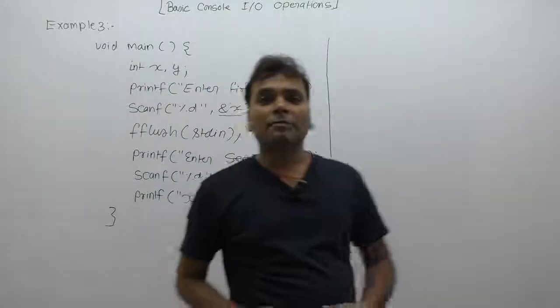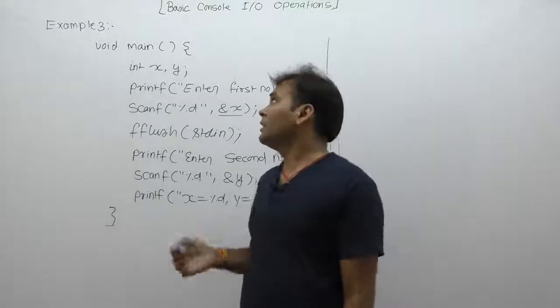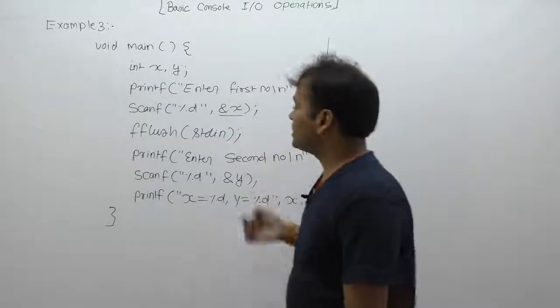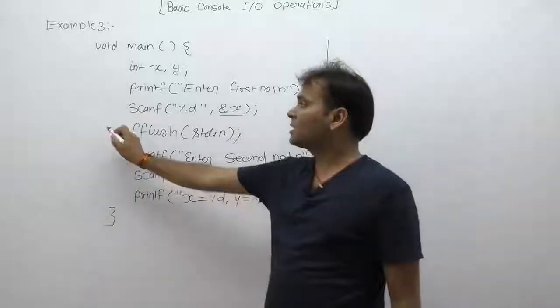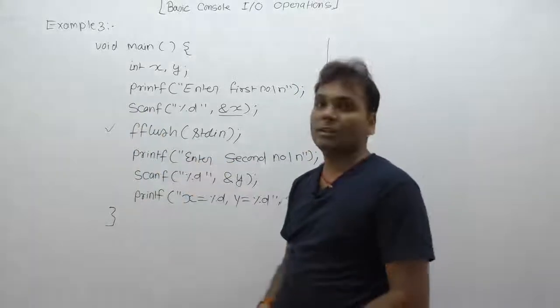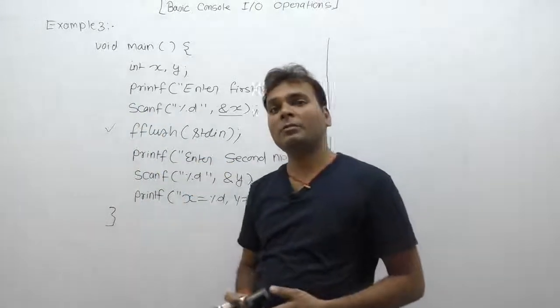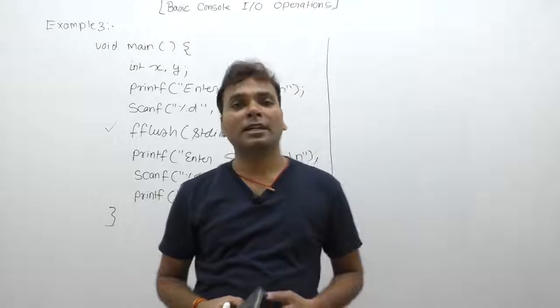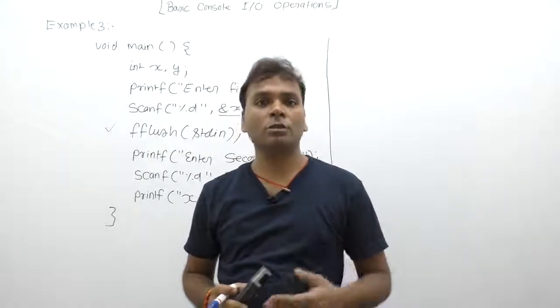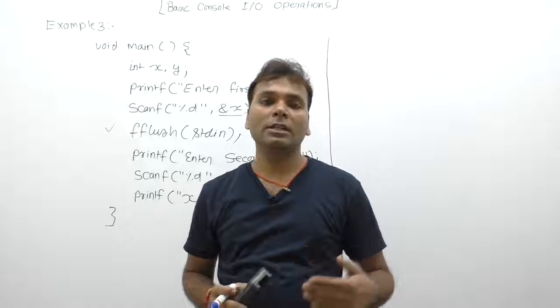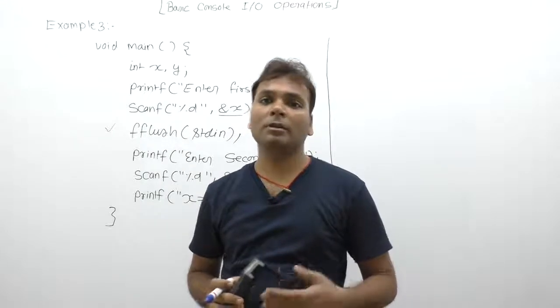Now next, another example of a scanner function similar to the previous one. But here we are calling an extra function, fflush, as we've seen. What is the working of fflush? During getchar or getc functions, fflush is used to remove existing contents from a buffer or flush the contents of the buffer.